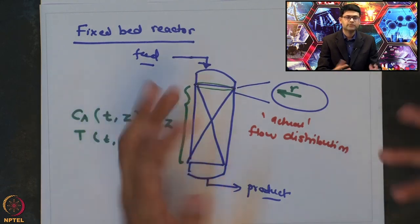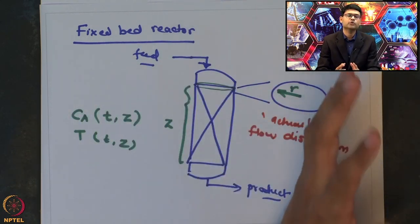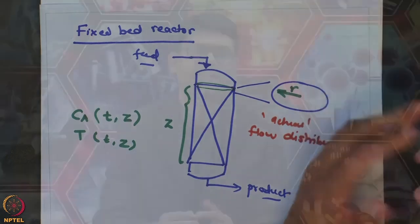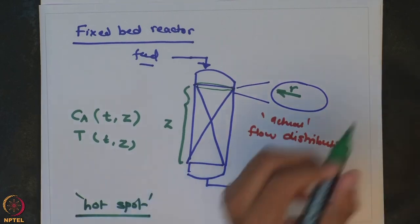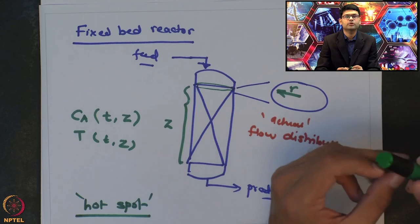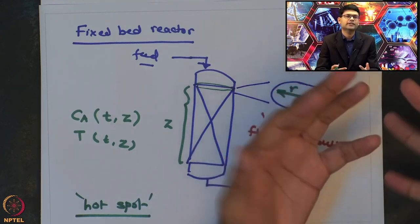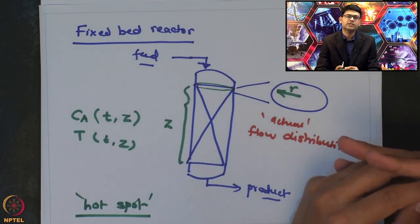Because of that variation, if the reaction is exothermic, you may develop what is known as a hot spot. At a certain location inside the bed, the temperature may shoot up to a very high value. This may be because of some sort of dead zone where a runaway reaction can take place, or maldistribution related issues which give rise to such hot spots in a reactor. Such hot spots can be detrimental because the temperature may shoot up to a very high value resulting in catalyst melting or runaway reactions. It is very essential that you monitor these hot spots and try to control the hot spot temperatures below a certain safe value.